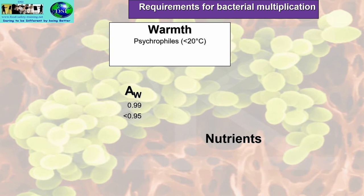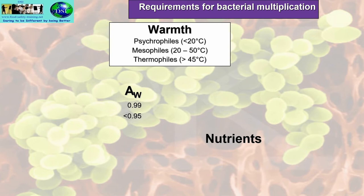For warmth, there are different types of bacteria. Psychrophiles prefer temperatures less than 20°C. Mesophiles prefer 20 to 50°C. Thermophiles are greater than 45°C. Food safety pathogens fall under mesophiles, which is 20 to 50°C. Some psychrophiles can go down to 0°C, and some thermophiles can go up to 160°C — those are the ones that live near thermal vents.